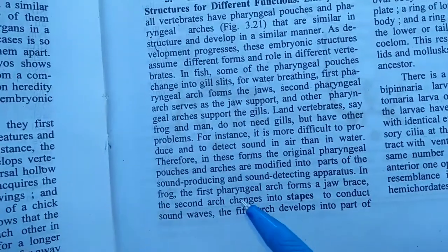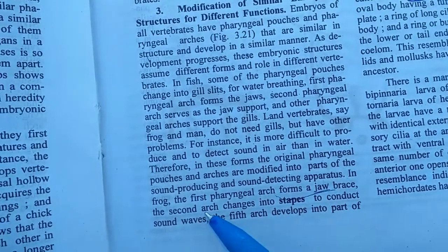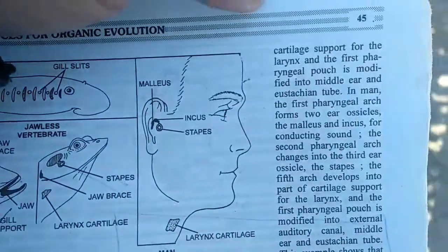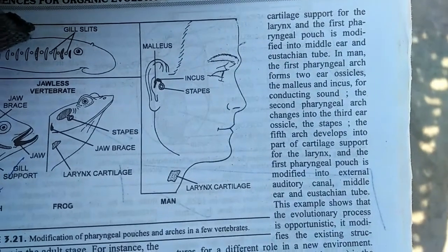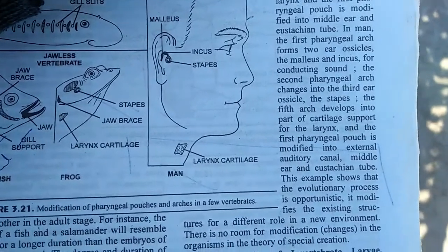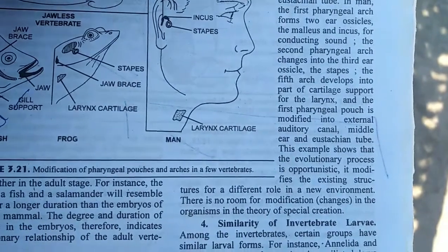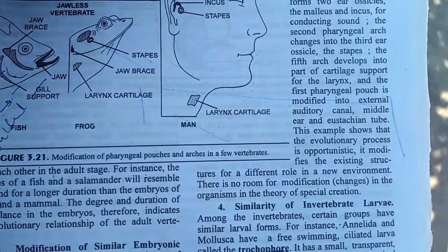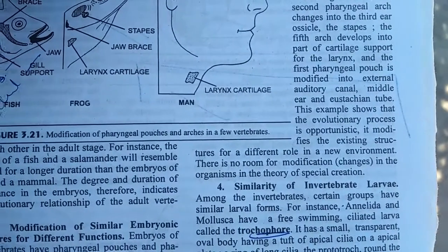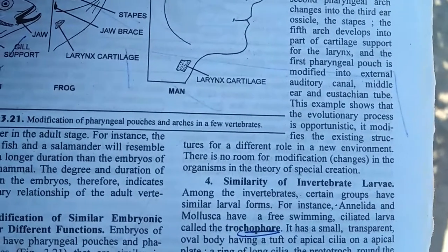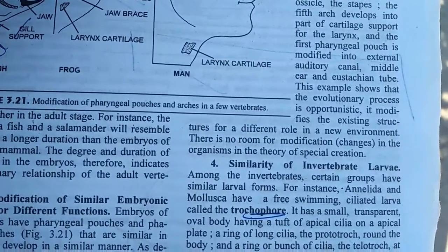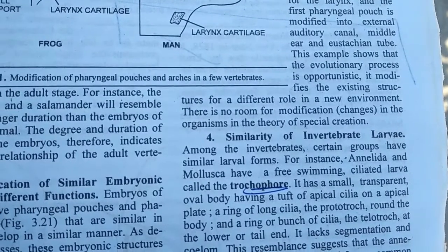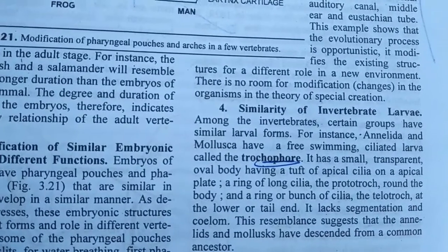If I discuss about the pharyngeal arcs: the second arc becomes the stapes to conduct sound waves. The fifth arc develops into a part of the cartilage of the larynx. The first pharyngeal pouch becomes the middle ear and the Eustachian tube in man. The first pharyngeal arc forms two ear ossicles in man — the malleus and incus — developing from the first pharyngeal arc to conduct sound. The second pharyngeal arc changes into the third ear ossicle, the stapes. The fifth arc develops into the cartilage of the larynx. And the first pharyngeal pouch is modified into the external auditory canal and middle ear Eustachian tube. This example shows that the evolutionary process is opportunistic — it modifies existing structures for different roles in new environments.